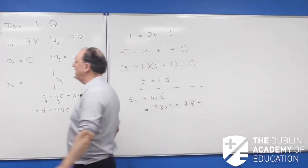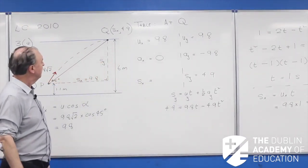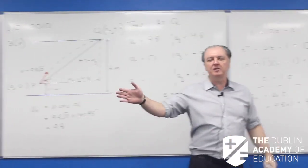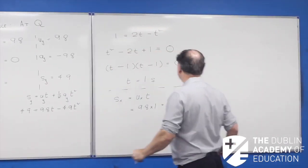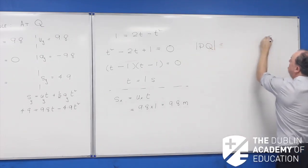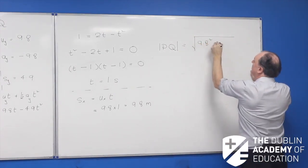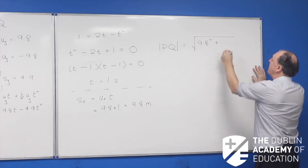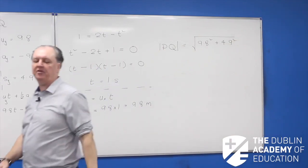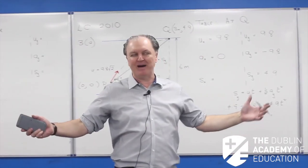Now I know Sx equals 9.8 meters and Sy equals 4.9 meters. The distance PQ equals the square root of Sx squared plus Sy squared — that's the square root of 9.8 squared plus 4.9 squared. Put that into your calculator and check the answer at the back of the notes.